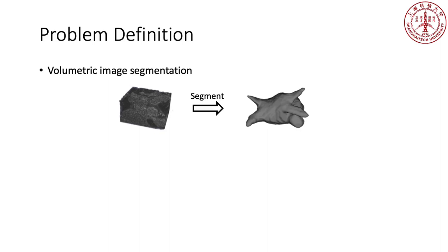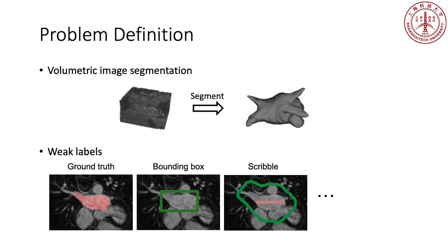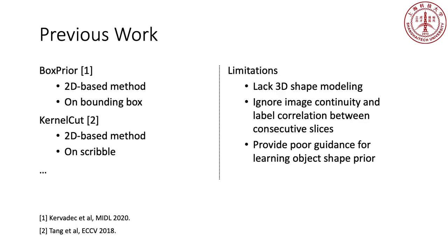Volumetric image segmentation takes a volume image as input and outputs a 3D mask. Supervised methods often require expensive pixel-wise labels. Weakly supervised methods reduce labeling costs by using weak labels, including bounding box and scribble. Previous works such as box-prior and kernel-cut are 2D-based methods that usually stack 2D masks together to get the final volumetric mask without 3D shape modeling, ignoring image continuity and label correlation between consecutive slices.